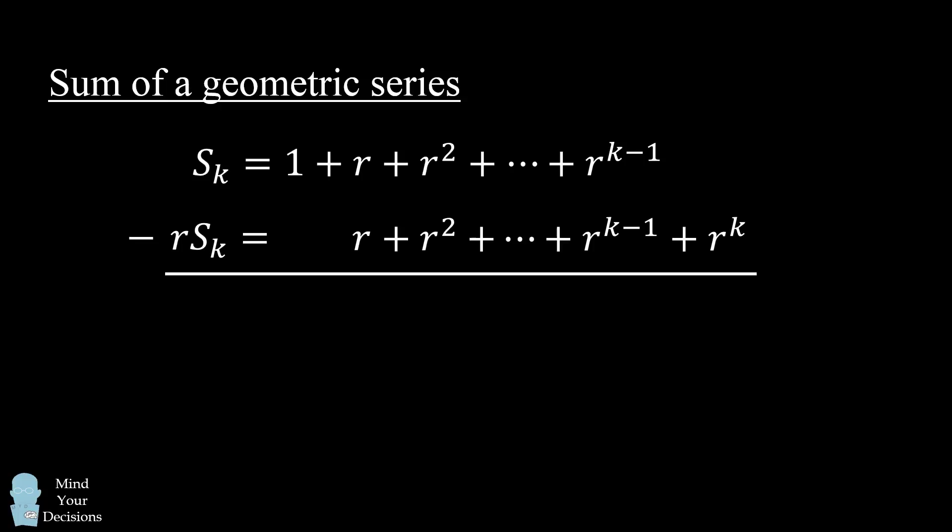We now subtract the second equation from the first. This will cancel out many terms. In particular, we cancel out the rs, we cancel out the r squares, we cancel out all of these middle terms, and we cancel out r to the power of k minus 1. When we subtract the two equations, the only terms that survive are 1 and minus r to the power of k.